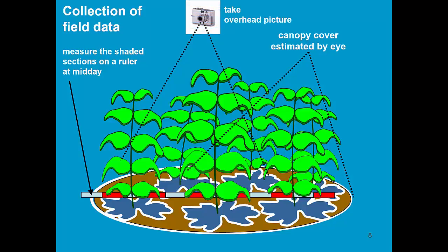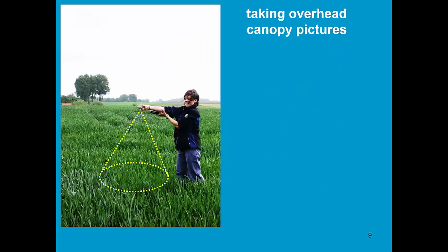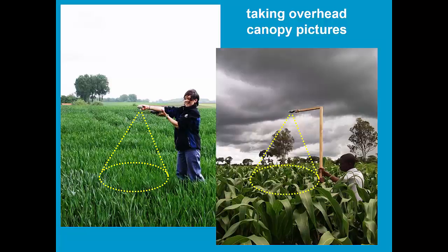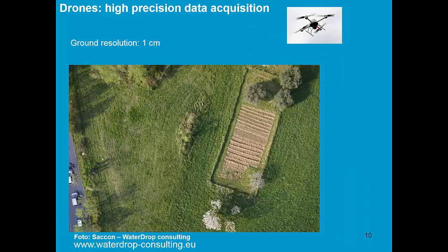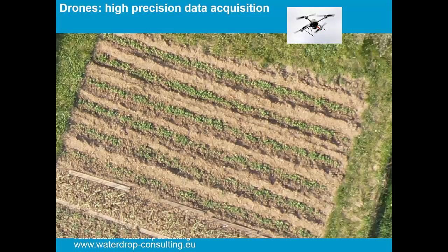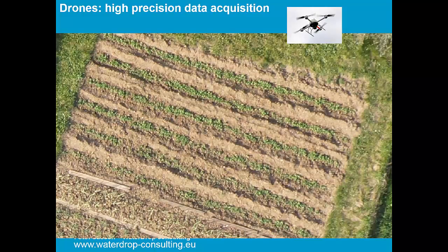Or we can take a picture. These are overhead pictures of the canopy. And if the canopy is large, the camera should be sufficient above the canopy to take representative pictures. So with the help of software, we can now assess the canopy cover.